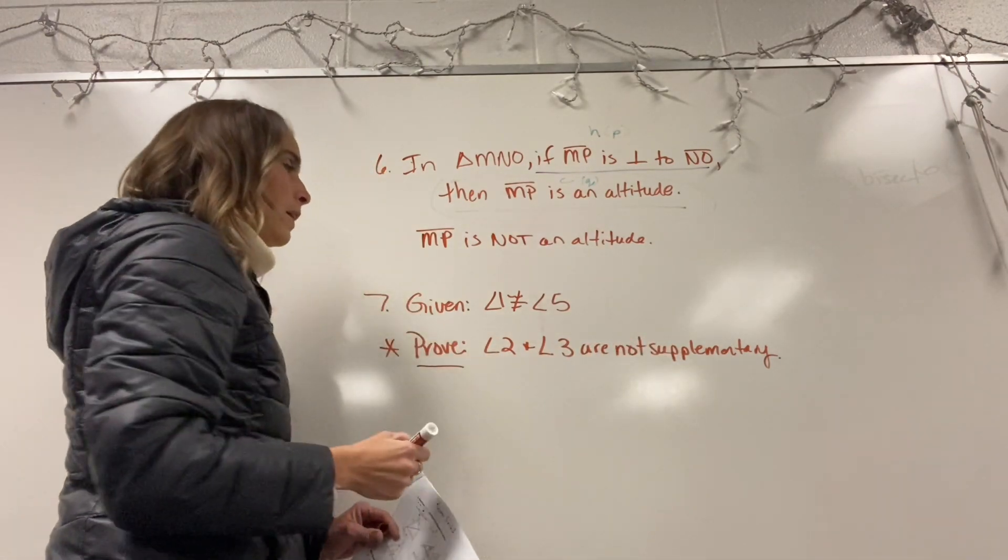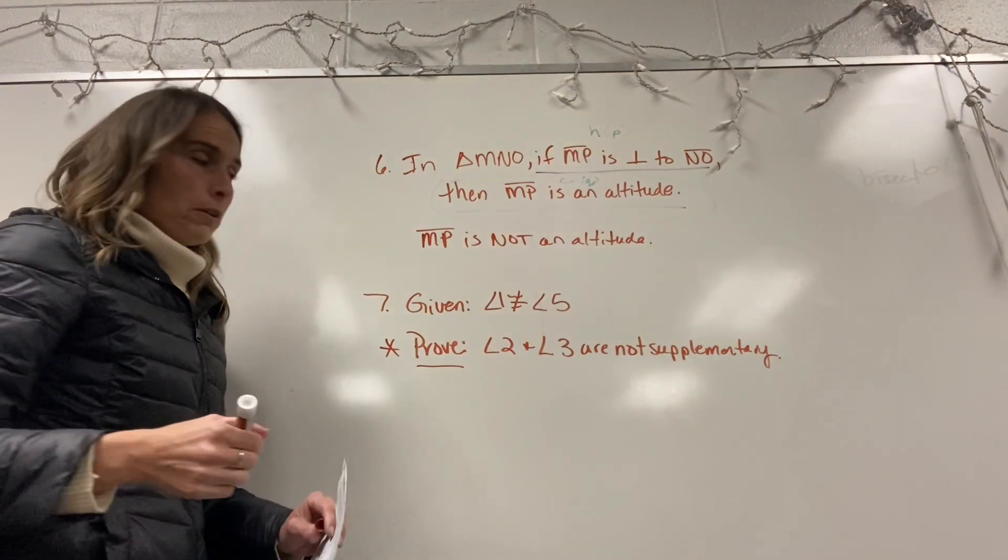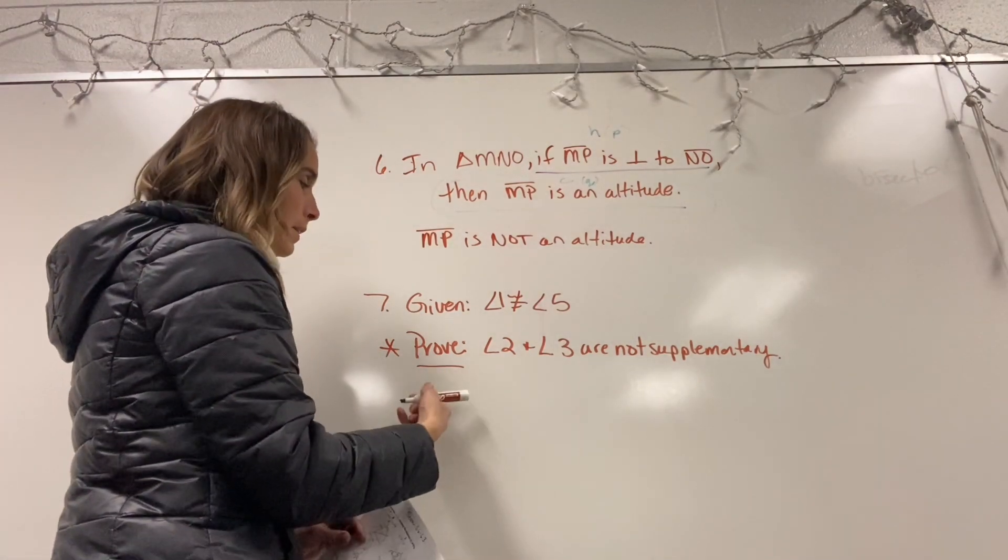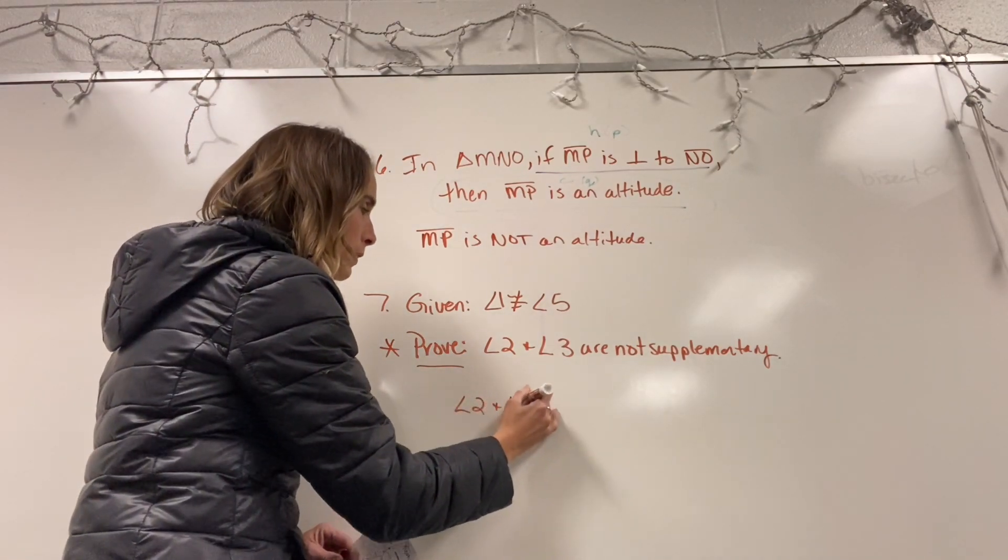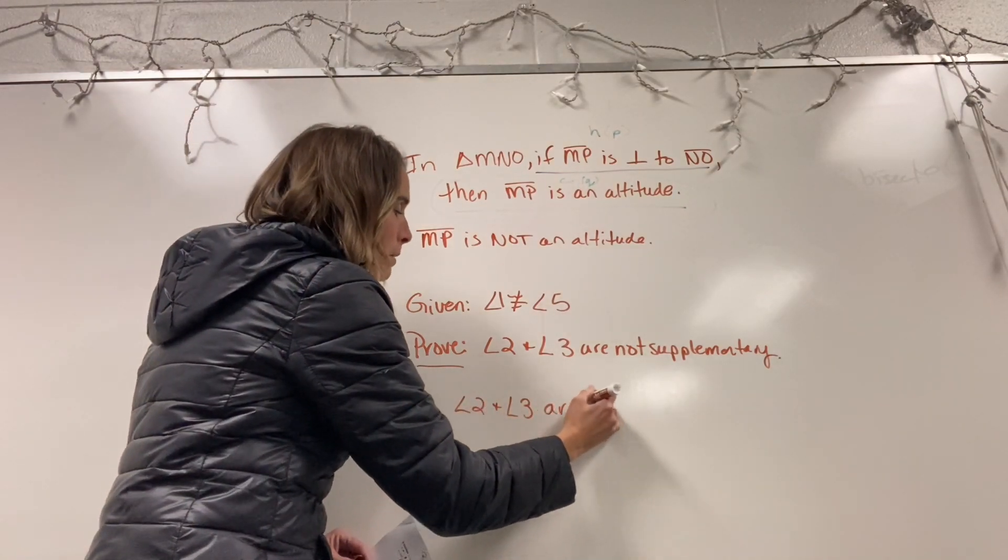you're going to take your proof part and you're going to write the opposite of the proof. So in this case, the first statement of an indirect proof would be angle 2 and angle 3 are supplementary.